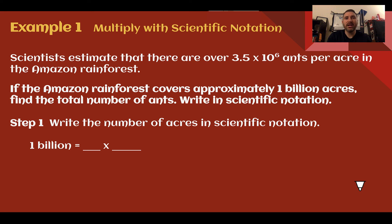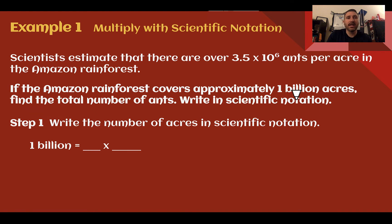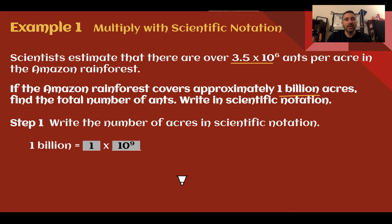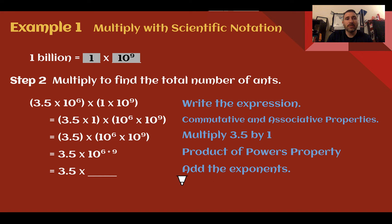Example 1: Multiply with scientific notation. Scientists estimate that there are over 3.5 times 10 to the 6th ants per acre in the Amazon rainforest. If the Amazon rainforest covers approximately 1 billion acres, find the total number of ants. Write in scientific notation. Step 1: write the number of acres in scientific notation. We need to make them in the same format. So 1 billion is 1 times 10 to the 9th.